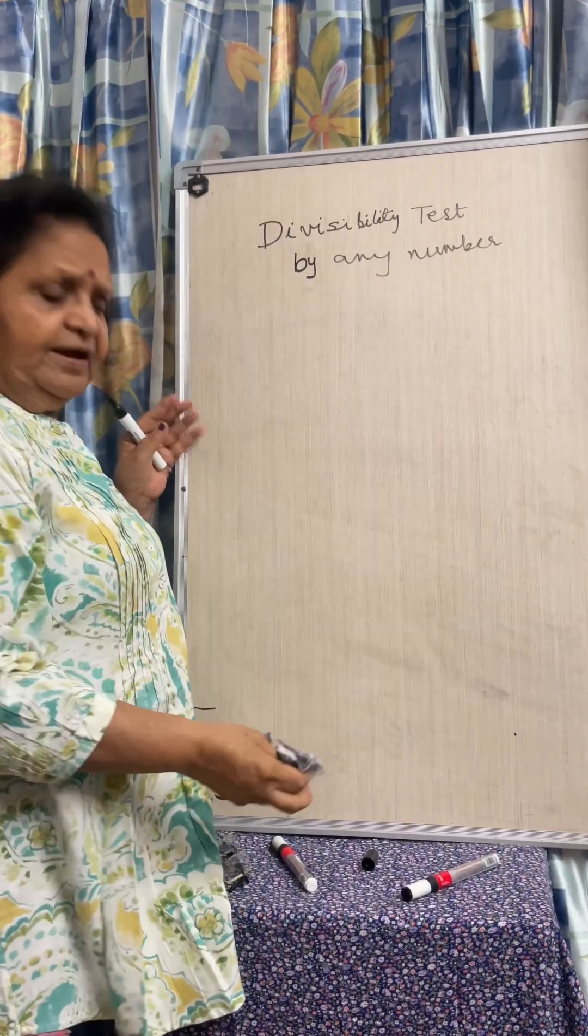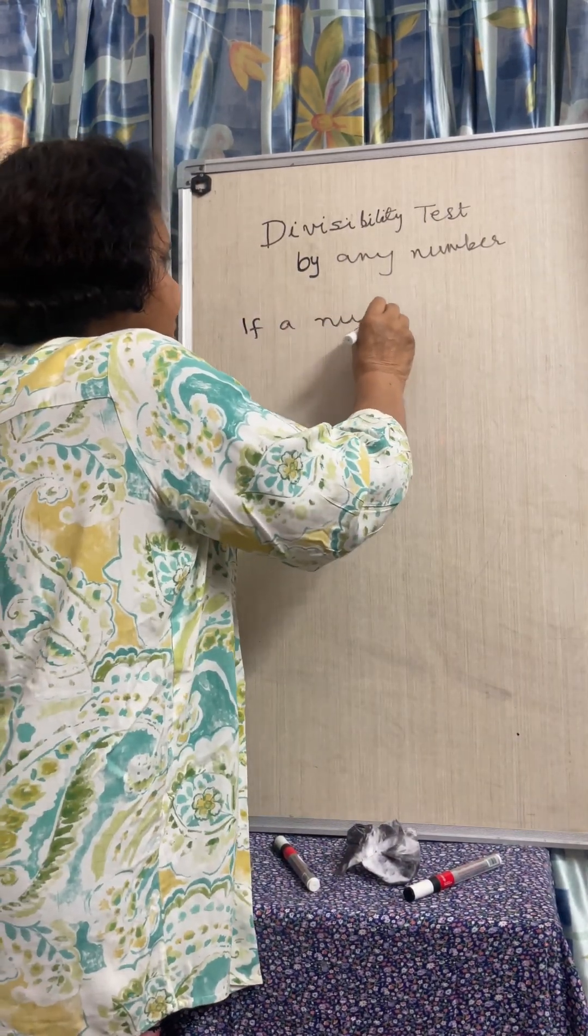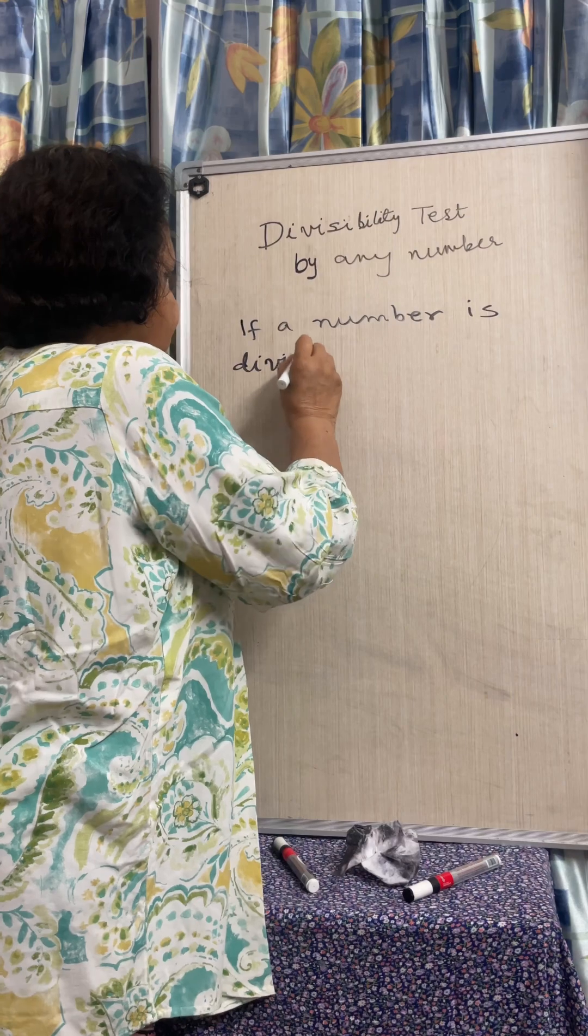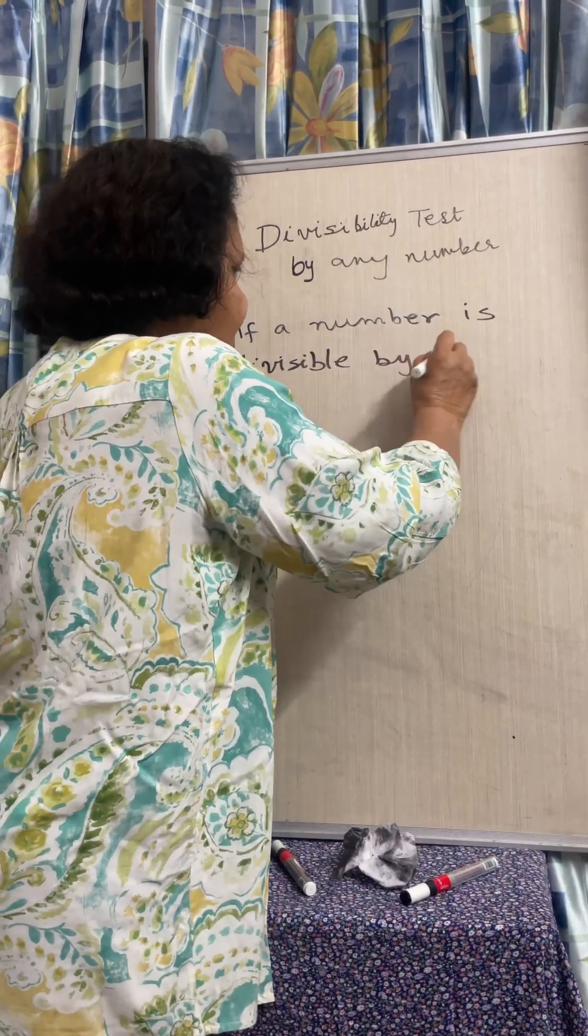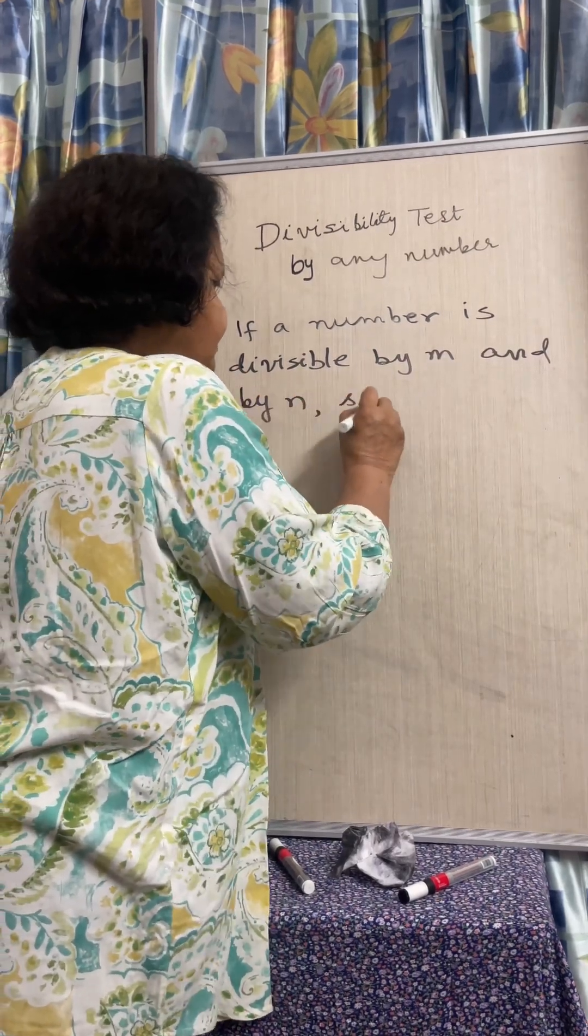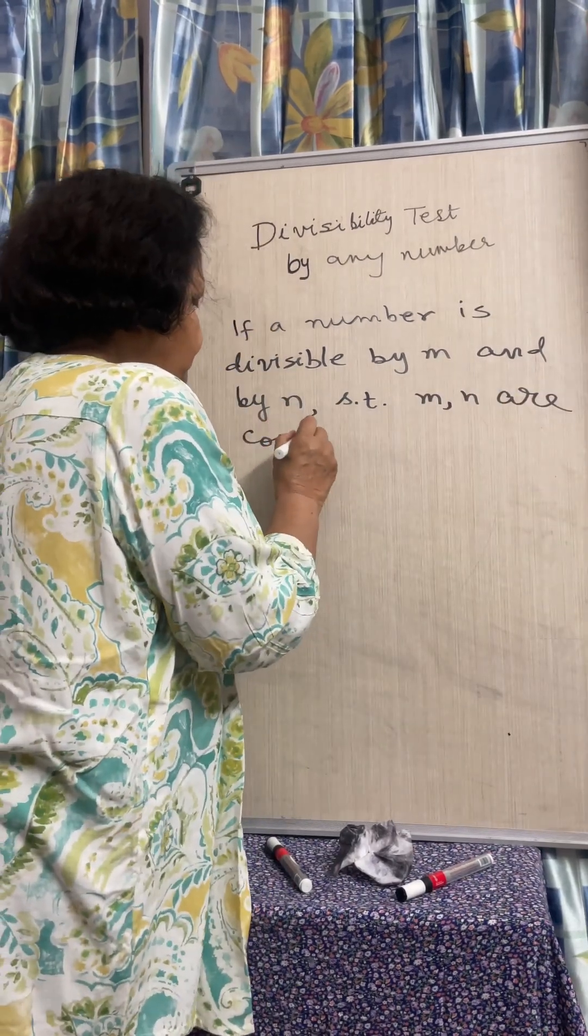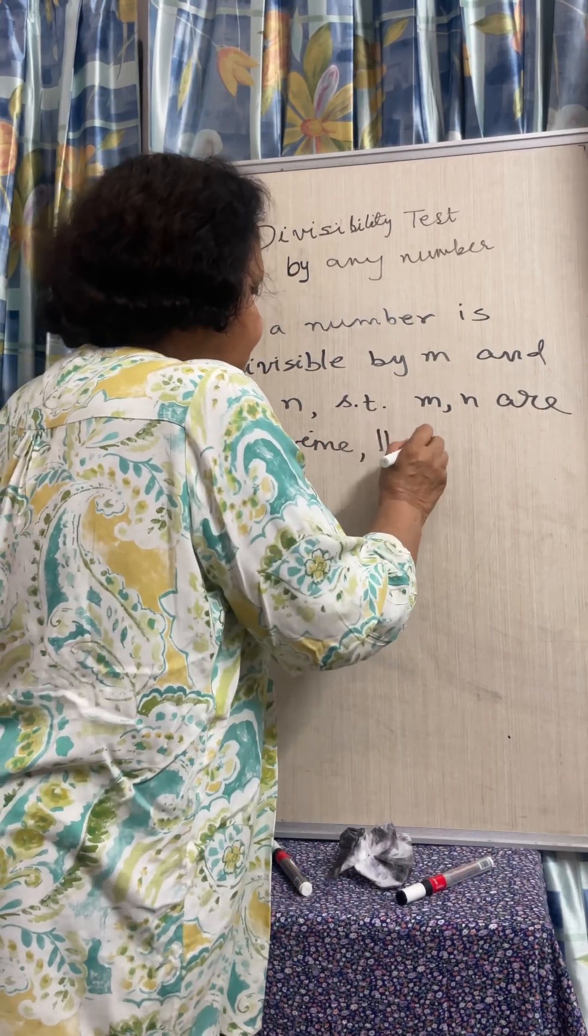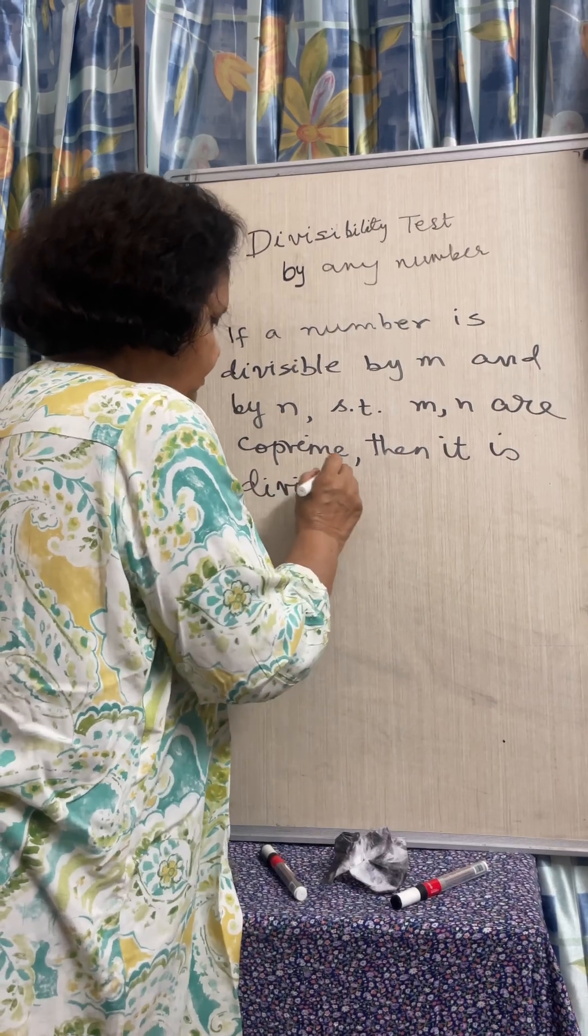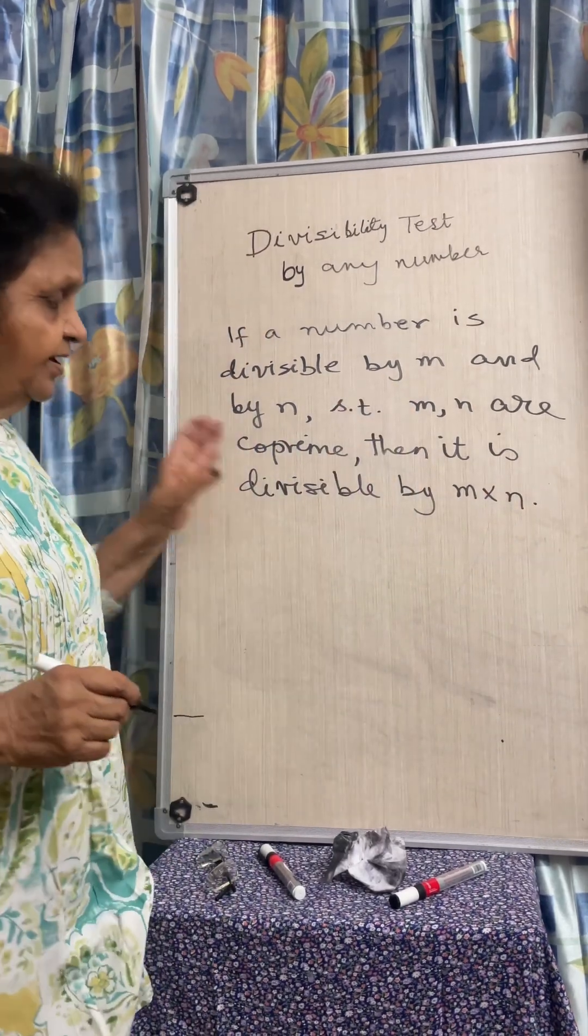So if a number is divisible by M and by N such that M and N are co-prime, then it is divisible by M into N. It's a very important result.